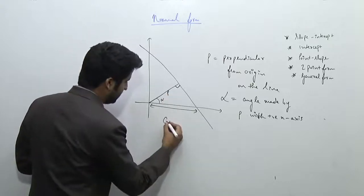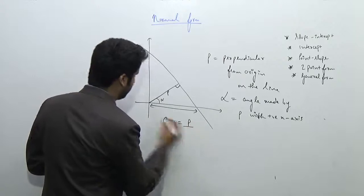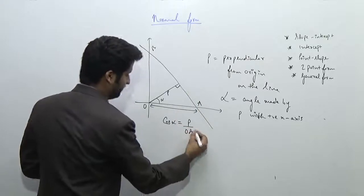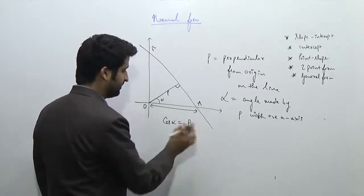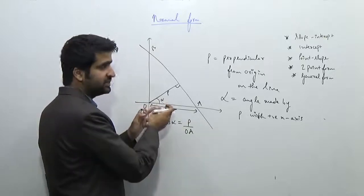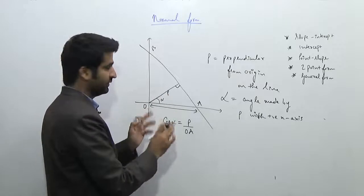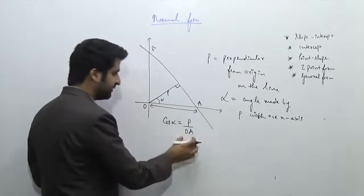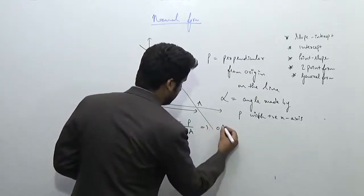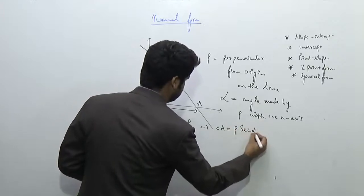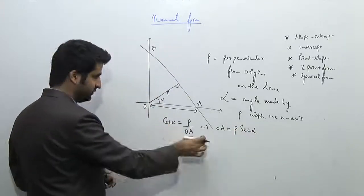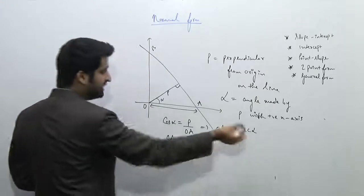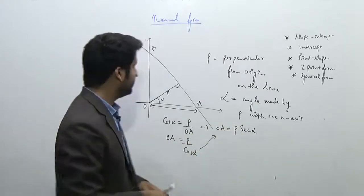We can simply see that cos α = p / OA, because cos θ = base / hypotenuse. In this case the base corresponds to angle alpha, so cos α = p / OA, which implies OA = p / cos α, which means OA = p·sec α. I had to find the value of OA, and OA comes out to be p·sec α.